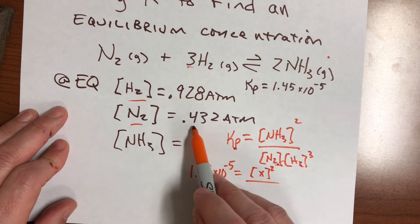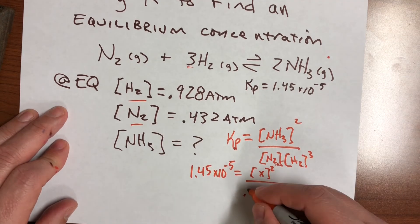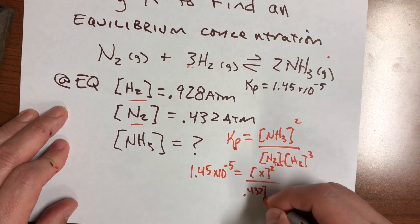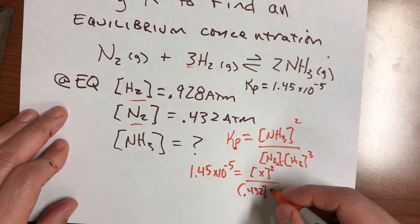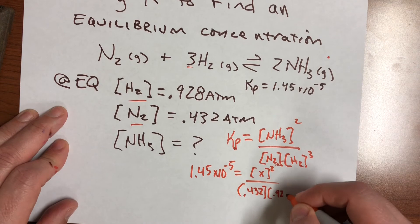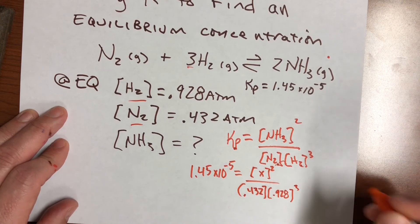And then on the bottom, the N2 number, they gave us that. That's 0.432. And the H2 number is 0.928, but we've got to remember to cube that. All right.